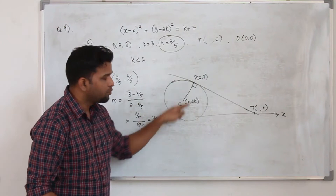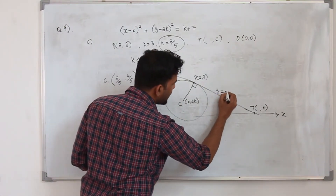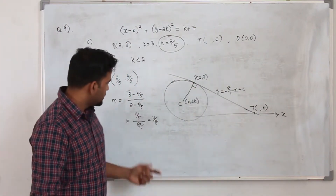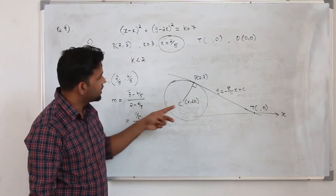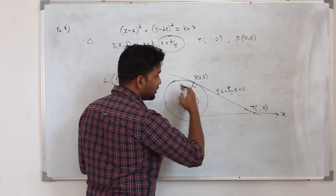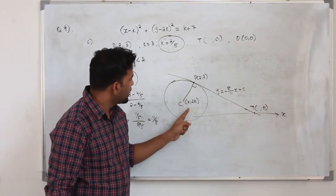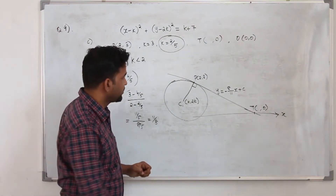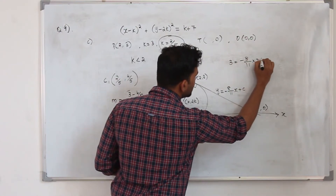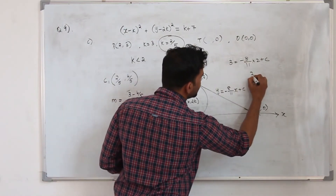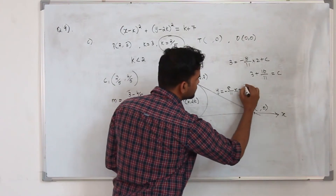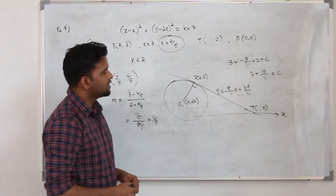The gradient of the tangent line is the negative reciprocal: minus 8 upon 11. So the tangent equation is y equals minus 8x upon 11 plus c. To find c, use point P of 2 comma 3: 3 equals minus 8 upon 11 times 2 plus c, giving minus 16 by 11. So c equals 3 plus 16 by 11, which is 49 by 11. We now have the equation of the tangent.